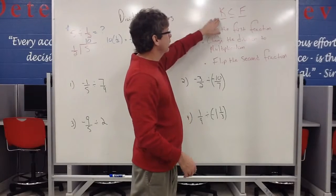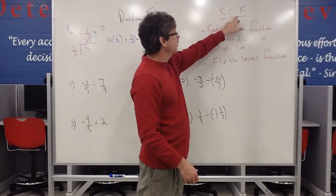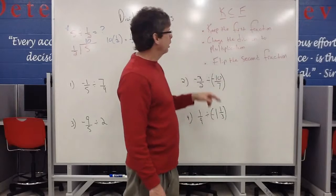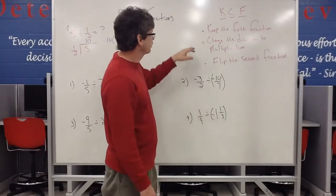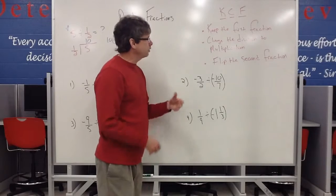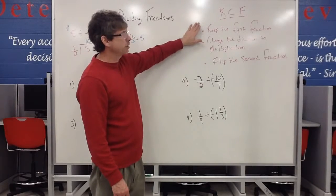In elementary terms, we call it the Kentucky chicken fried method. So in other words, we keep, change, and flip. So we Kentucky chicken fried, if you will. So our strategy basically is keep the first fraction the same.